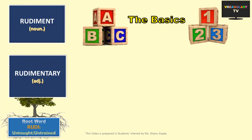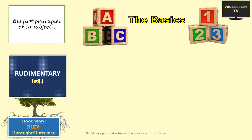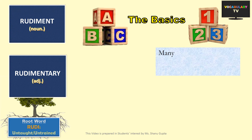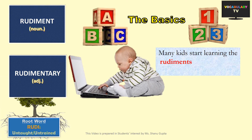The very first word we are going to cover is 'rudiment'. Used as a noun, the word refers to the basics or the first principles of a subject. For example, ABCs are the basics of the English language, and so are numbers to the knowledge of maths — these basics can rightly be referred to as rudiments. It's interesting to note that many kids start learning the rudiments of reading and writing as early as age 1.